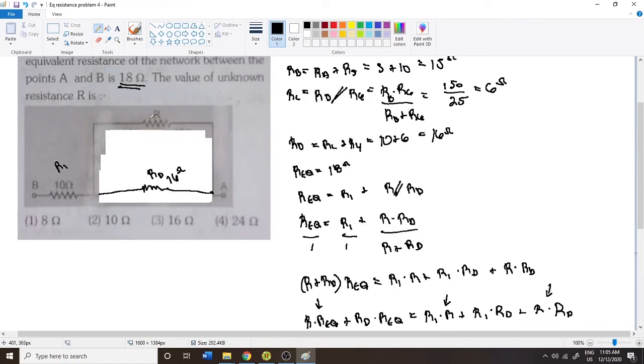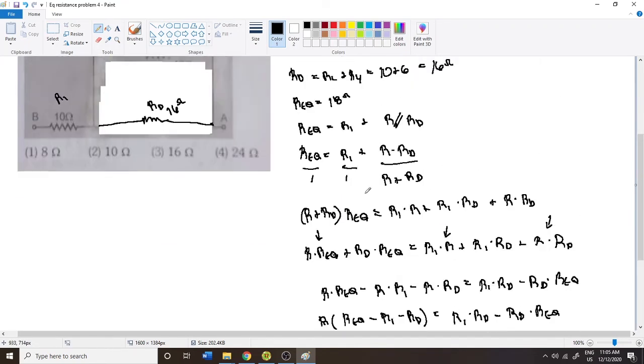Now you can plug it back in. You can put 16 there and 16 in parallel with 16 is going to create 8, and then that 10 plus 8 is going to be 18. So that kind of checks out for our sanity check.